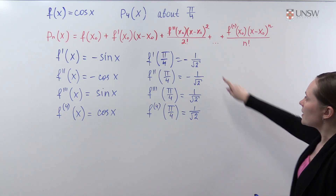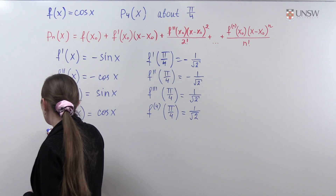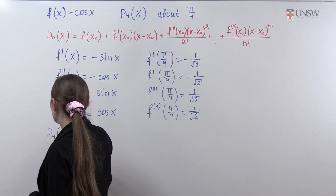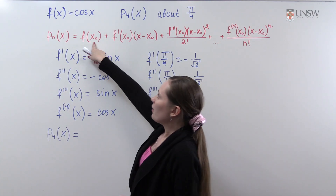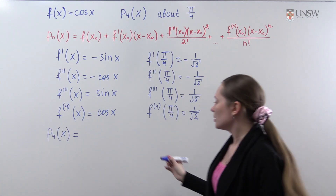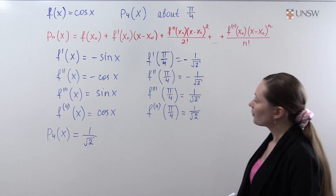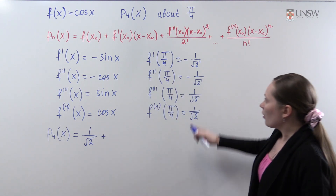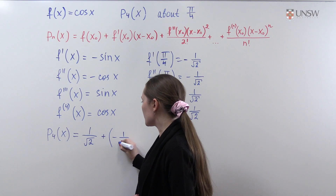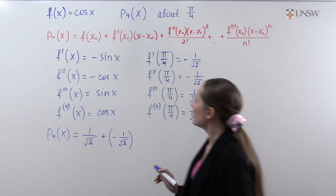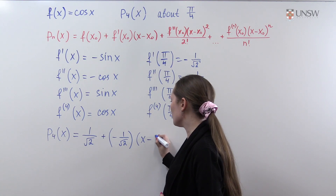So now we substitute these values into the formula. We obtain that P4 of x equals the value of the function f at the point pi over 4, which is 1 over square root of 2, plus the value of the first derivative, which is minus 1 over square root of 2, times (x minus pi over 4).